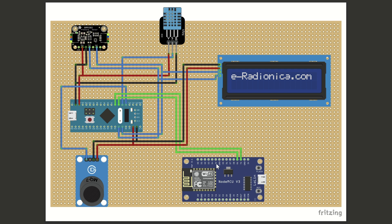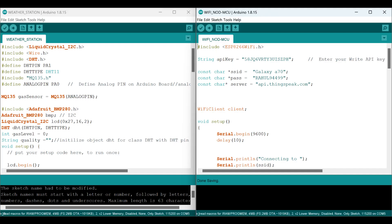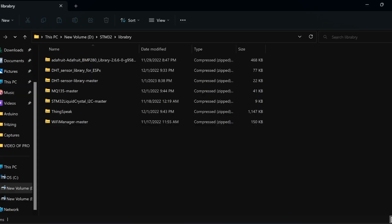This is the Wi-Fi module NodeMCU. Here we use only RX and TX — the RX pin goes to A2 of STM32 and the TX pin goes to A3 of STM32. So we have two separate cores: one for Wi-Fi NodeMCU and another for STM32.